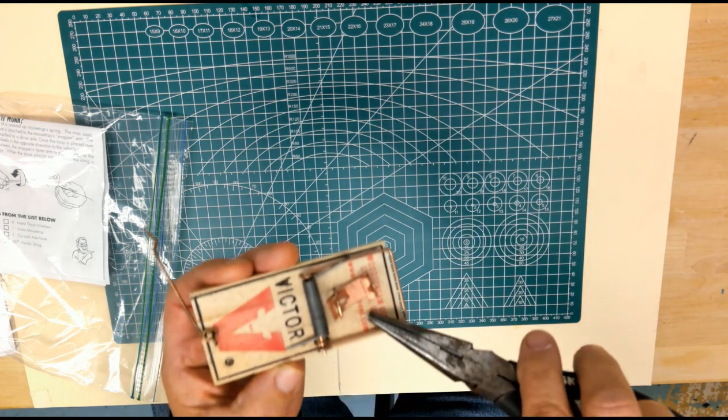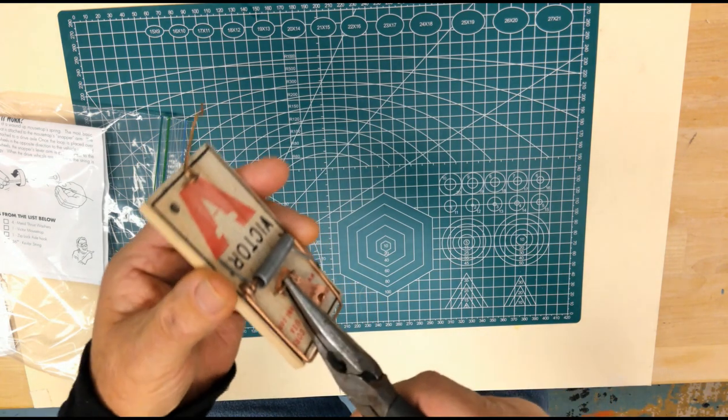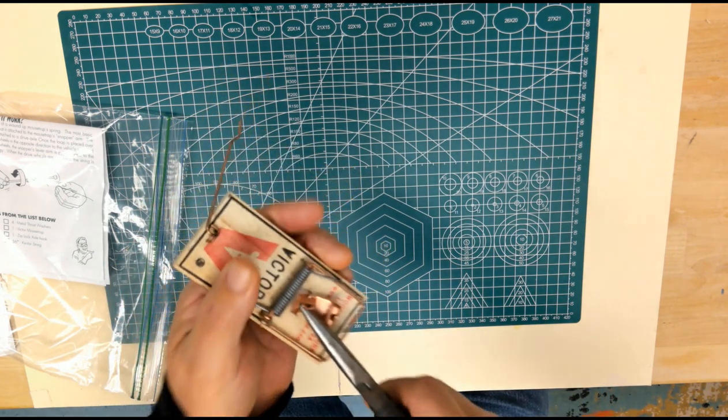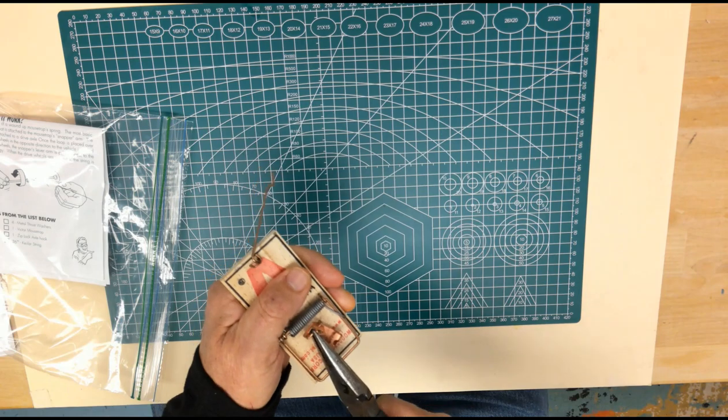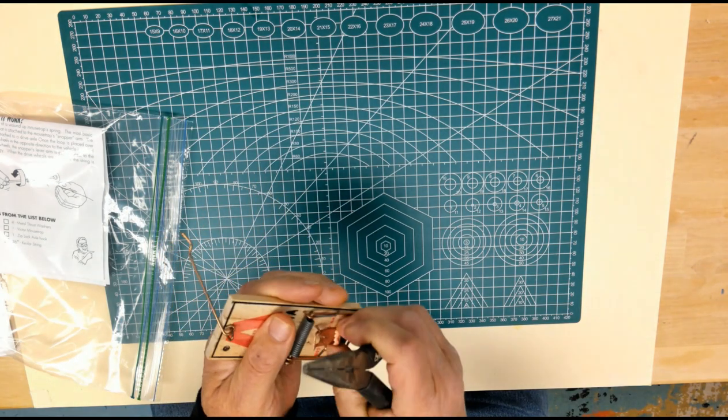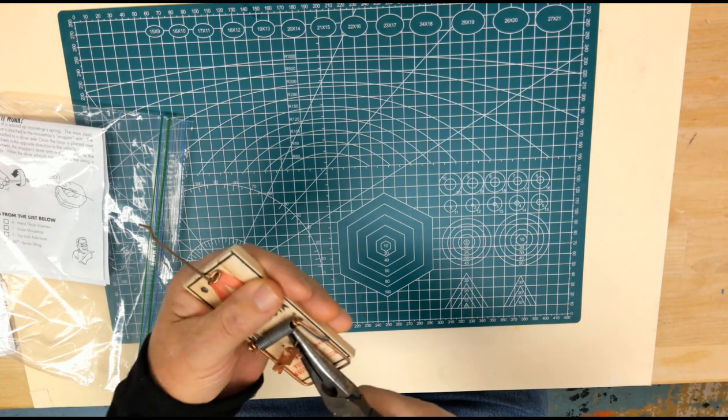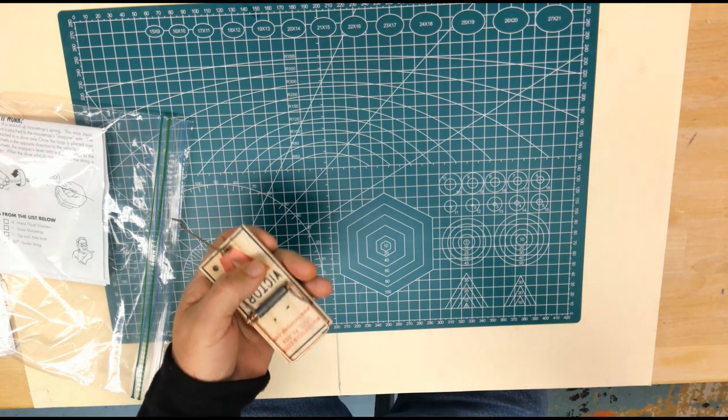First thing we're going to do is remove the little bait keeper right here. And you're just going to grab, there's like a big staple holding it in. And you're just going to grab it like this and just twist it. And it will come out. You do have to put a little bit of muscle behind it.